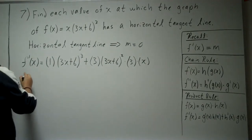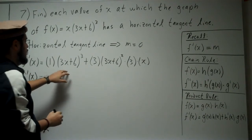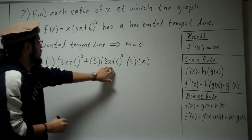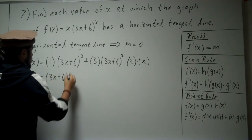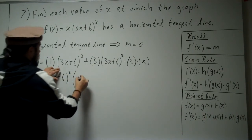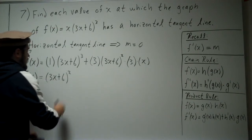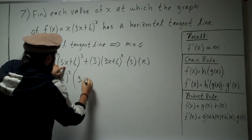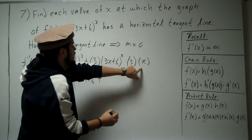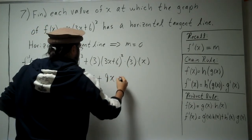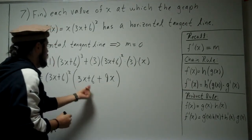Let's go ahead and do some algebra here — we already did the calculus. We can factor out (3x+6)². Inside we're left with 1 plus 3 times 3, which is 9, giving us 9x. Then 9x plus 3x gives us 12x.